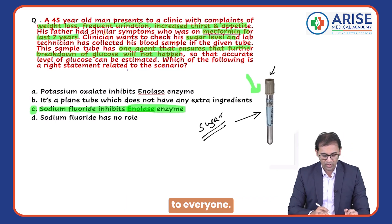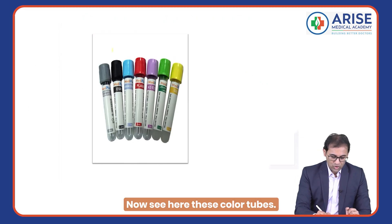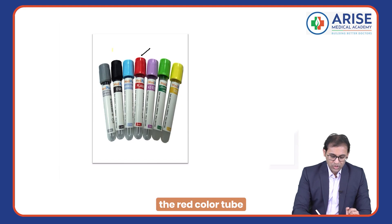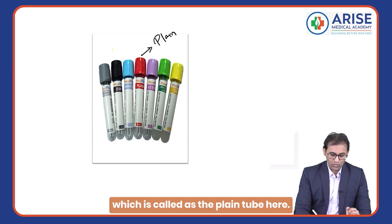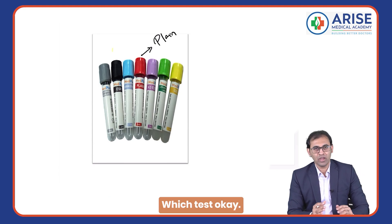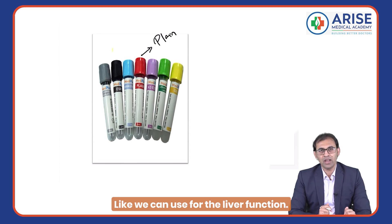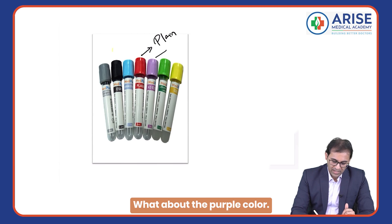Now, these color-coded tubes are very important. The red color tube is the plain tube — used for serum analysis such as liver function and kidney function tests.